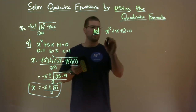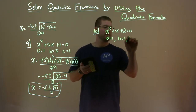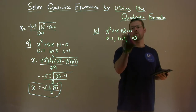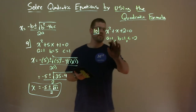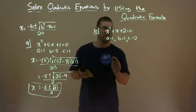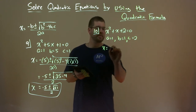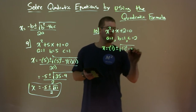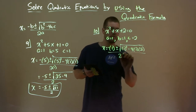As you get better with this, you won't have to write this out every time. A lot of times I go right into just writing the quadratic formula. But in the beginning, make sure we don't make any mistakes. So x equals negative b — so negative 1 plus or minus the square root of 1 squared minus 4 times a, which is 1, times c, which is 2, all over 2 times 1.